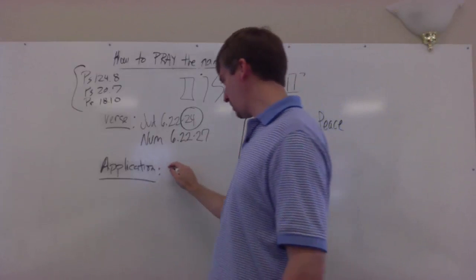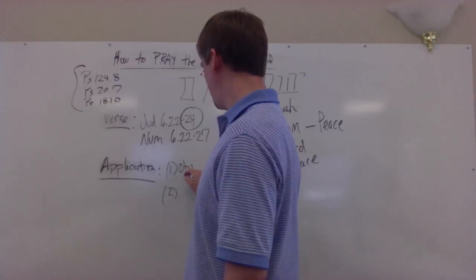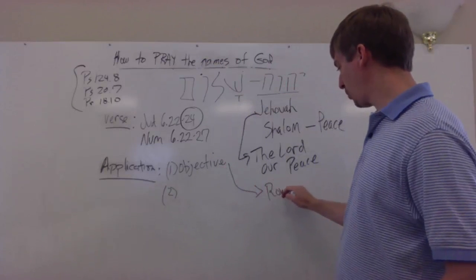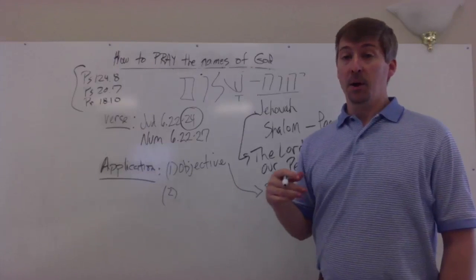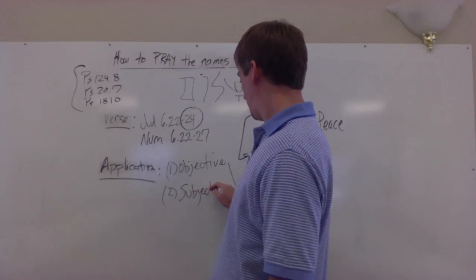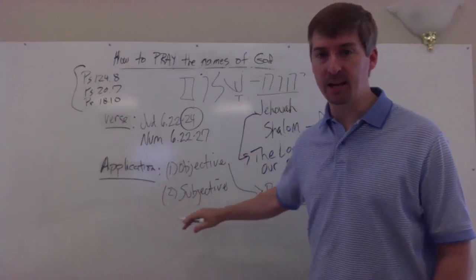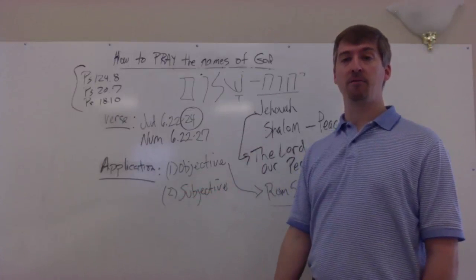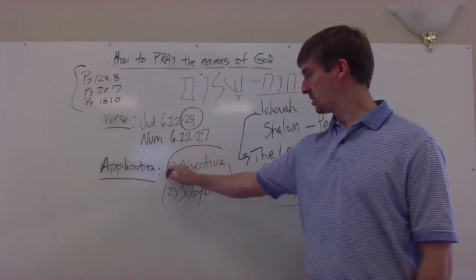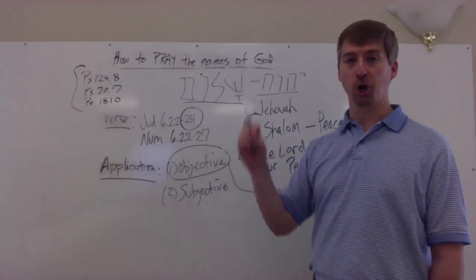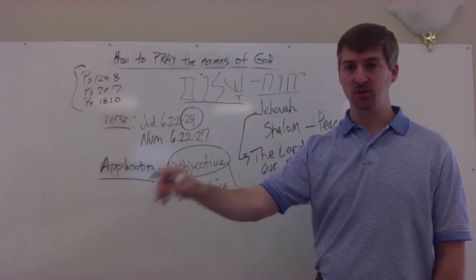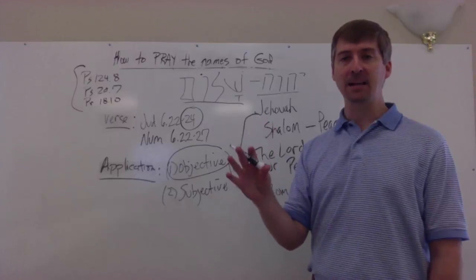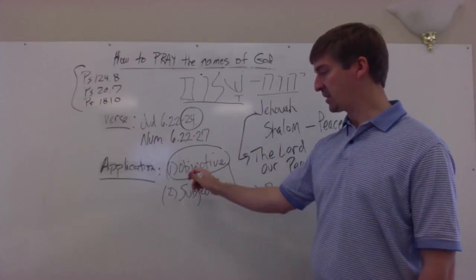When it comes to application, there are two things. When we talk about peace, there is objective peace. Objective peace is Romans 5:1. You'll never have subjective, experiential peace unless you've got the objective. Romans 5:1 says, Now that I've been justified by God in Christ, I have peace with God. So peace comes from the source. It comes from Jehovah Shalom. And that peace is Christ Jesus. Christ justifies us, forgives us of our sin, counts us righteous with his very righteousness given to us, and makes us his children, makes us children of the Father. So that's that objective peace. Without that peace, you'll never have subjective peace.